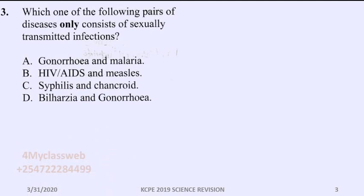This was question number three that was being tested again in the KCPE for the year 2019 and it was on sexually transmitted infections. The question reads which one of the following pairs of diseases only consists of sexually transmitted infections?